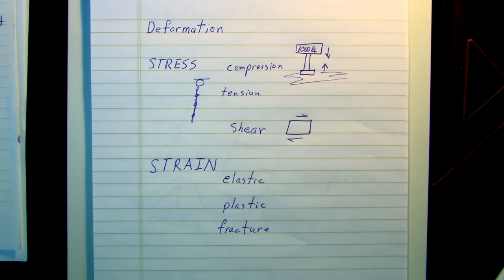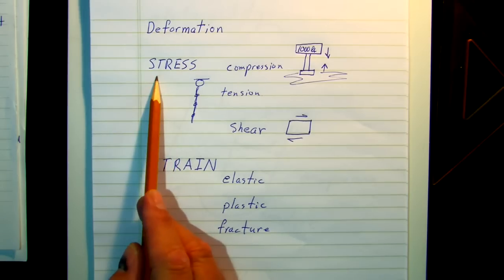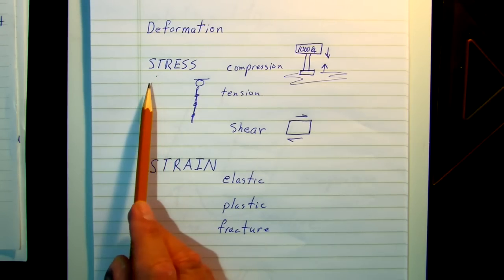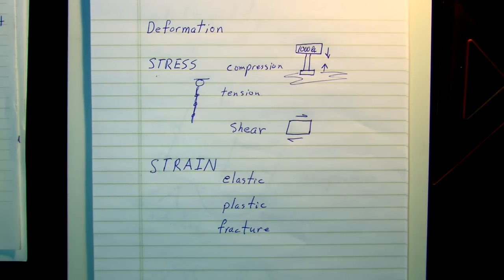In this chapter we will discuss how rock deformation occurs, but first we'll need to understand some terms. The first term is stress. Stress is when we apply force to something such as pulling or pushing or twisting. And there are three of these stresses.